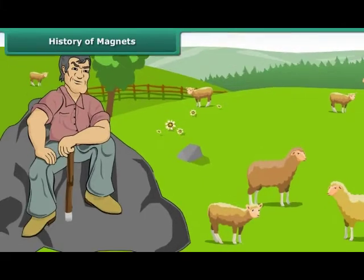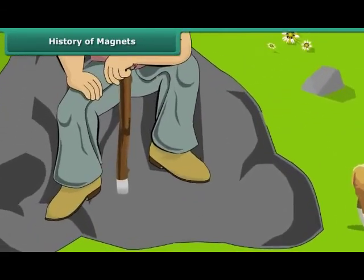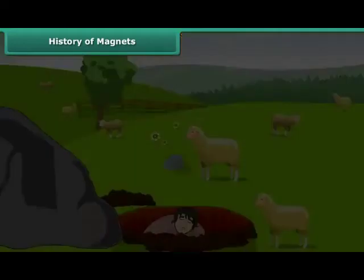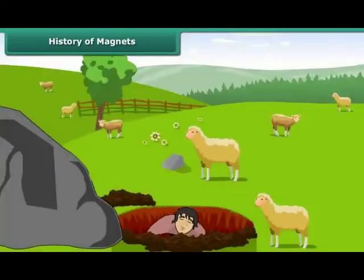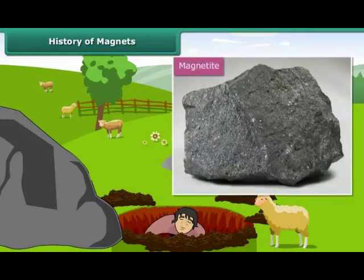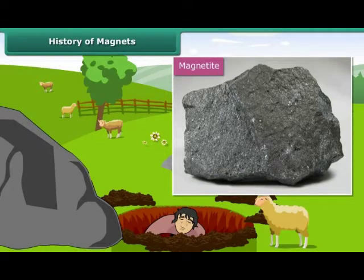Suddenly, the metal tip of his stick became firmly stuck to a large black rock on which he was sitting. To find the source of attraction, he dug up the earth to find magnetite, a natural magnetic material. This type of rock was subsequently named magnetite, which was named after Magnus himself.